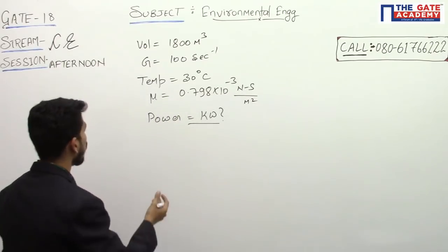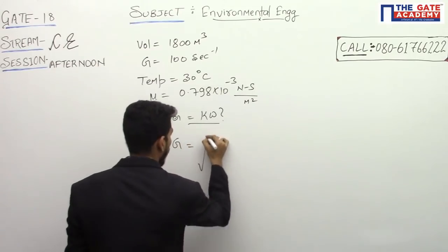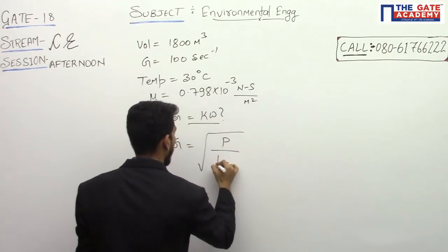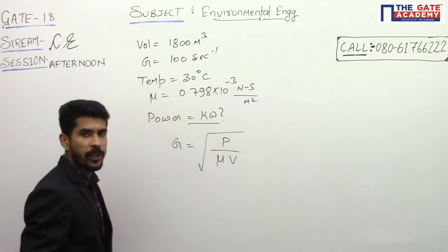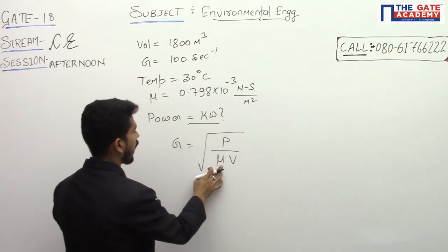For a flocculation tank we know that G is equal to under root of P divided by mu into V. P is the power, mu is the dynamic viscosity of water, and V is the volume.